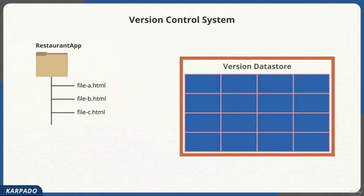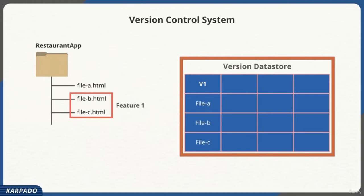Sundar instructs the VCS software to store the current state of the project, typically by running a command. Once he runs the command, the VCS software makes a copy of all the files and stores them inside the data store. Now assume Sundar has a new requirement to introduce feature one, with code changes needed in file B and file C. He makes those changes, then runs the command again to save the state of his current work — but this time the VCS software stores the information slightly differently.